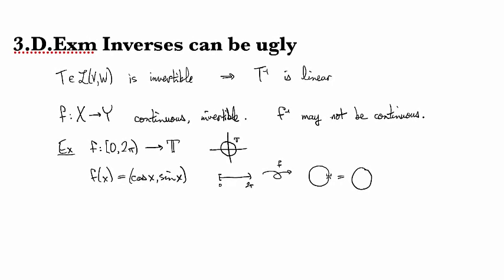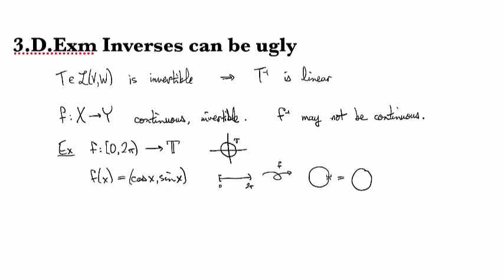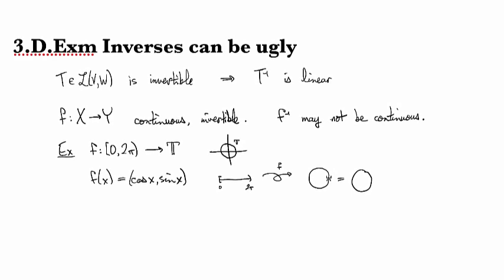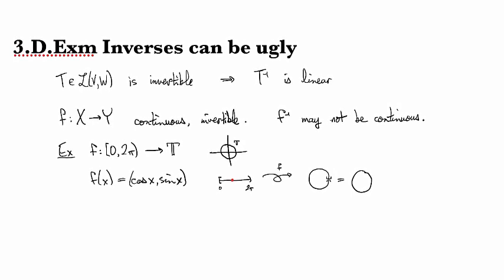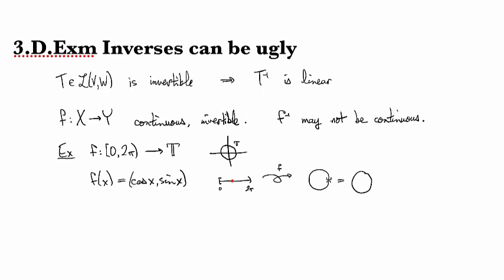It's not hard to convince yourself this is an invertible map. There's a bijective correspondence—if you pick any point in the interval, you can find exactly where it goes to in the circle.